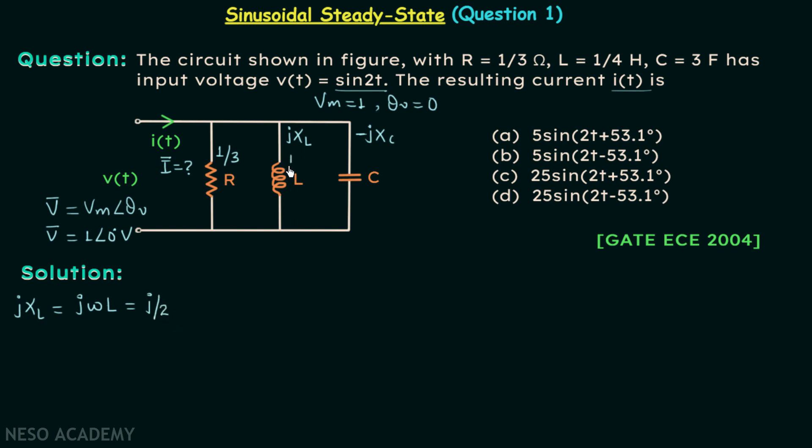So here we will have j/2 ohms. Now moving on to negative jXC, negative jXC is equal to -j/(ωC). Omega is 2 and C is 3, so we have -j/6.